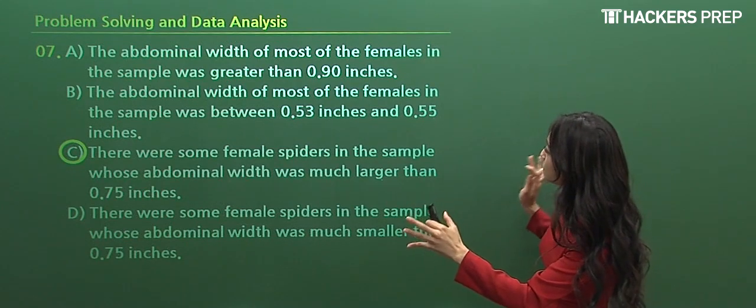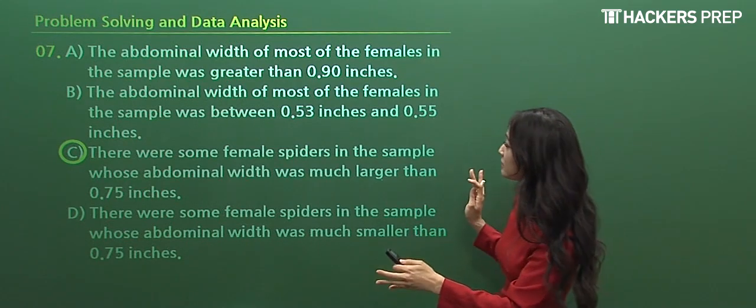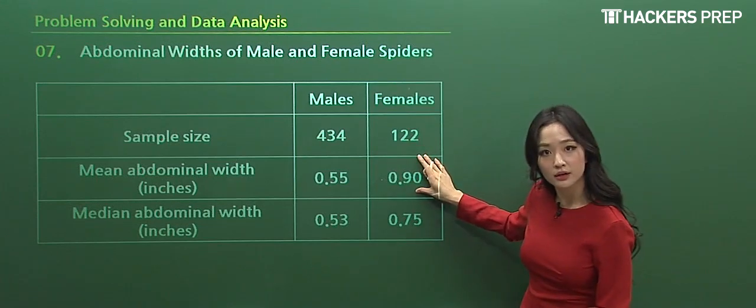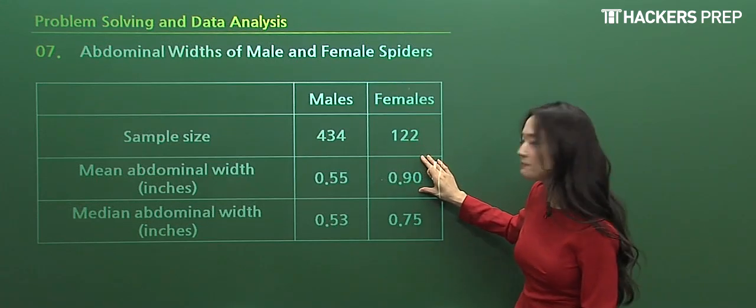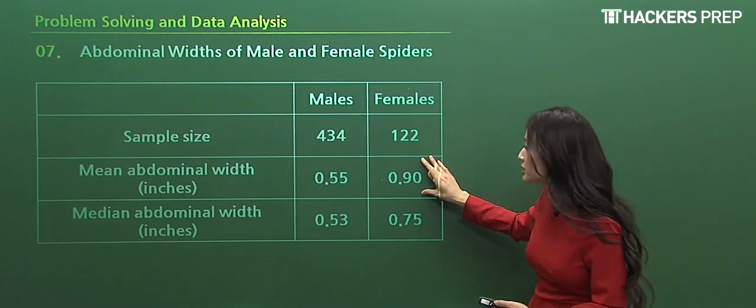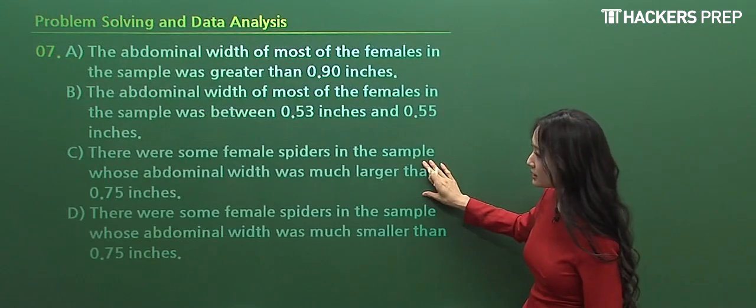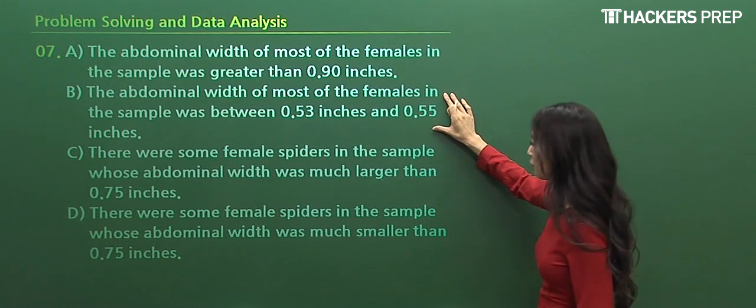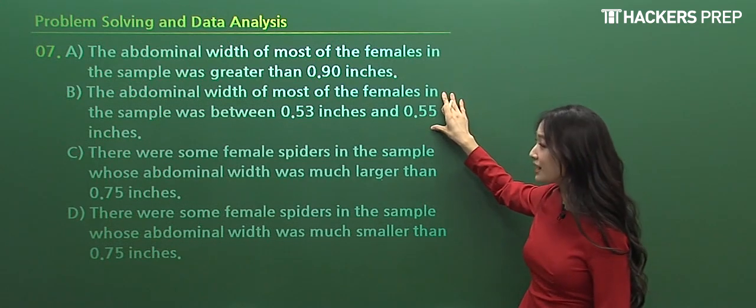Let's look at A: the abdominal width of most of the females in the sample was greater than 0.9. Let's go back to the graph. If they were a lot greater than 0.9, the average would not pop up as 0.9, right? It means that majority were about 0.9. That's what it means. B, the abdominal width of most of the female in the sample was between 0.53 and 0.55. Well, I don't really know if that's going to hold true, and I think it should be around 0.9 since that's going to pop up as our average.